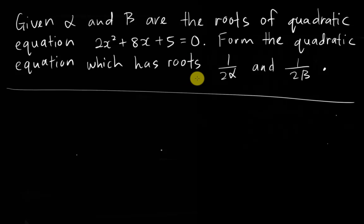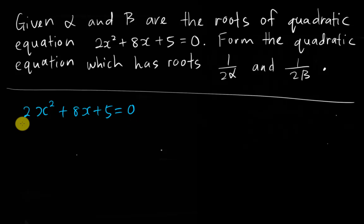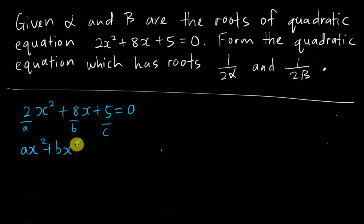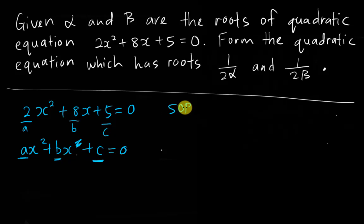For this equation, the first thing you always do is find the sum of roots and the product of roots. We have 2x² + 8x + 5 = 0, so a = 2, b = 8, c = 5, based on the general equation ax² + bx + c = 0. Here, a is the number beside x², b is beside x, and c is the number without x.